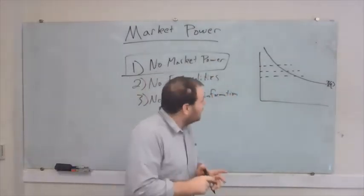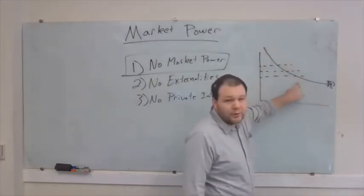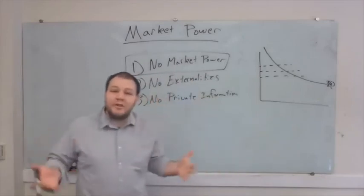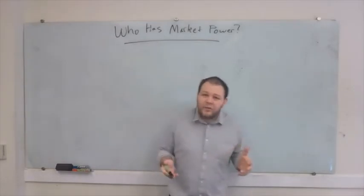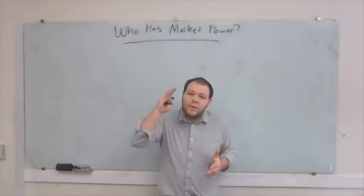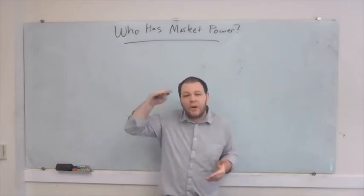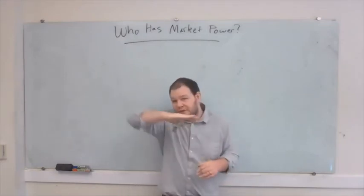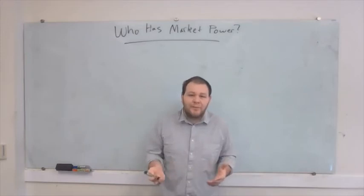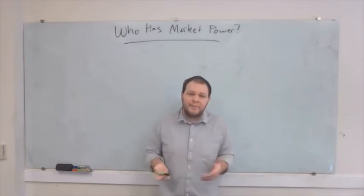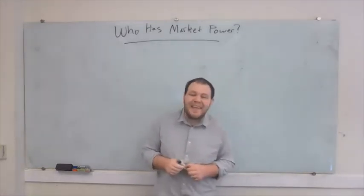We're going to build a theory trying to understand how firms make decisions when they have some control over the price they're setting, and then think about the ramifications of that for society. Market power is the ability to choose the price at which you're going to sell your product — the ability to sell at least some output at a whole range of different prices rather than just one single market price you can't control. So why do some firms have market power and others don't? What's the basis of market power? Let's think about a couple of specific examples of a monopoly.